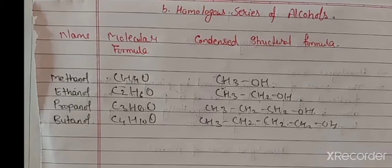Meth means one carbon molecule. While adding the CH2 group — incorporating the CH2 group into the first molecule — the hydrocarbon chain is going to increase. Then we call it methanol, meaning one carbon molecule; ethanol is a two carbon molecule.